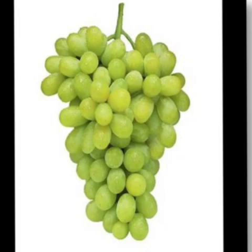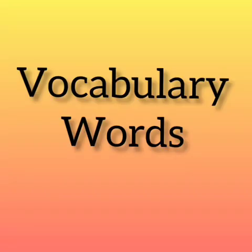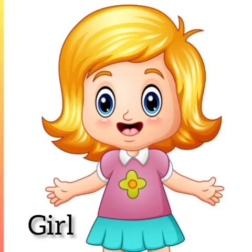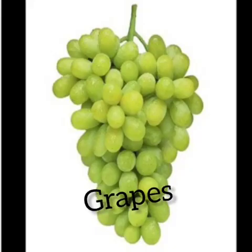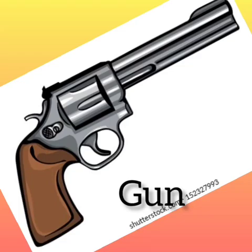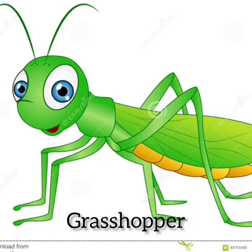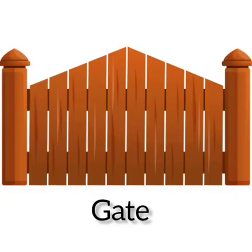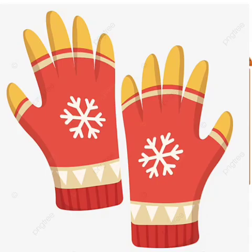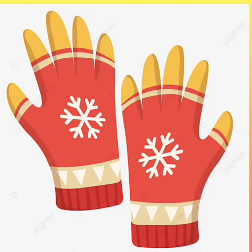Now, let's do some vocabulary words related to letter G. G — girl, g — goat, g — grapes, g — gun, g — grasshopper, g — gift, g — gate, g — gloves, g — goggles.